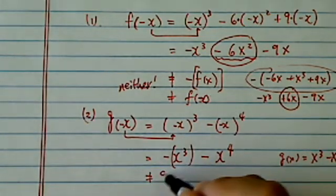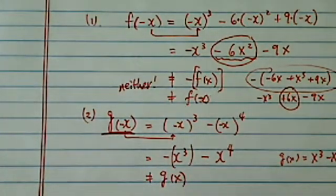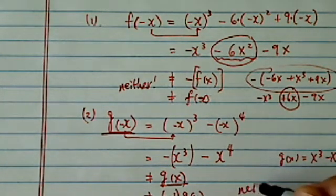Okay, so this doesn't equal to g of x. So basically, the testing function doesn't equal to the function itself, and it doesn't equal to minus 1 times the function either. Okay, so now we have another neither over here.